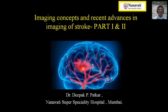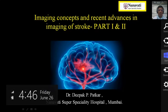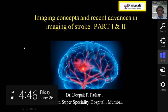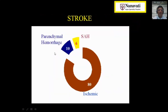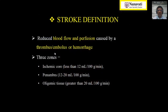Good day. This is the second part of imaging concepts and recent advances in imaging of stroke. In the first part, we covered the basics of stroke, which included the causes of stroke like subarachnoid hemorrhage, parenchymal hemorrhage, and what we're concentrating on today — that is 80% which is formed by ischemic stroke. Stroke definition is reduced blood flow and perfusion caused by thrombus, embolus, or hemorrhage.